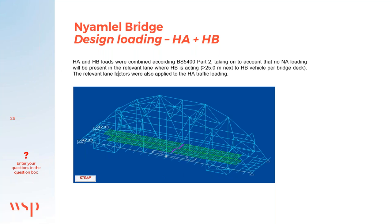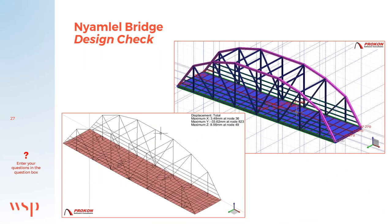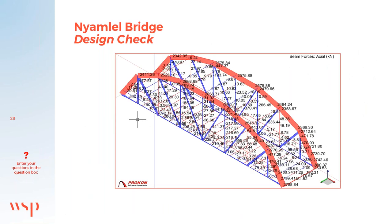A design check of the superstructure took place in Procon, while the designs themselves were done in STRAP. The design checks were also conducted in Procon Sumo. These snippets show the actual forces found in the structural steel members of the truss.